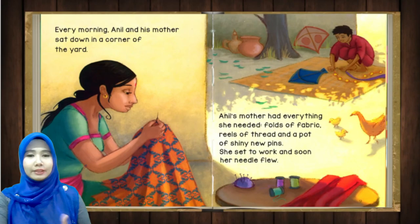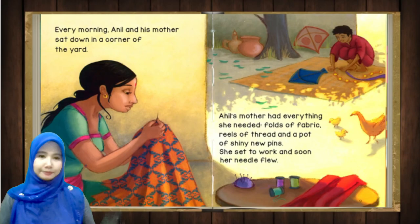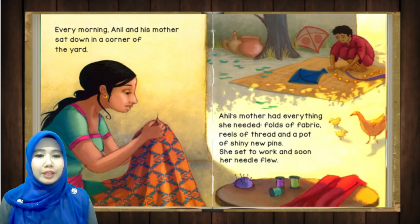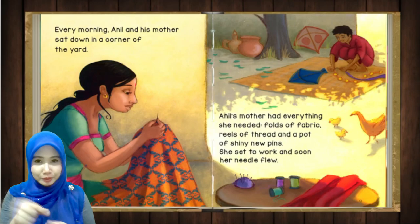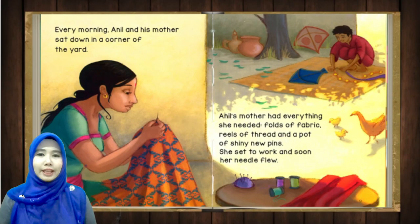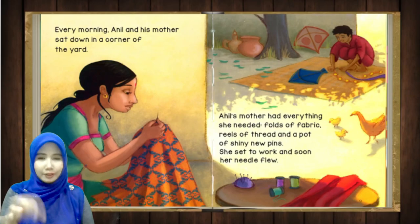Every morning — setiap pagi — Anul and his mother sat down in a corner of the yard. Annual's mother had everything she needed: folds of fabric — fabric ni kain — reels of thread and a pot of shiny new pins — thread tu benang, shiny new pins, jarum-jarum dan cucuk. She set to work and soon her needle flew — bukan flew berterbangan, maksudnya dia work very fast.